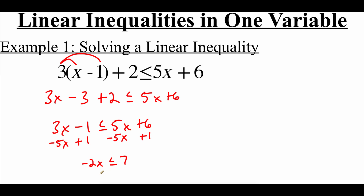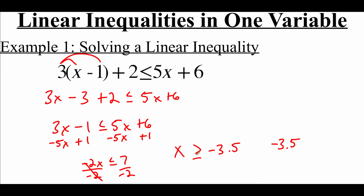Now we need to get rid of the negative two attached to x. There's multiplication happening so we use division — we divide each side by negative two. Because we're dividing by a negative number, we flip the inequality symbol: it was less than or equal to, so it becomes greater than or equal to. The negative twos cancel on the left giving us x, and seven divided by negative two gives us negative 3.5. In interval notation, negative 3.5 is the smallest value and it is included, so it gets a square bracket; the interval runs to positive infinity, which always gets a parenthesis: [−3.5, ∞).